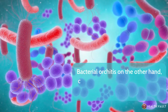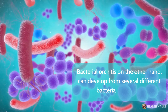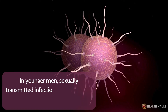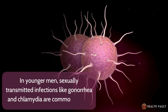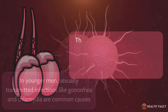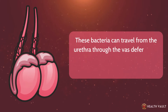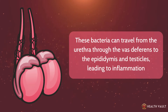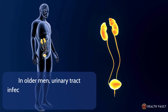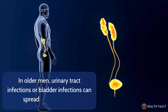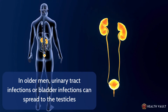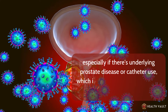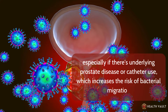Bacterial orchitis, on the other hand, can develop from several different bacterial infections. In younger men, sexually transmitted infections like gonorrhea and chlamydia are common causes. These bacteria can travel from the urethra through the vas deferens to the epididymis and testicles, leading to inflammation. In older men, urinary tract infections or bladder infections can spread to the testicles, especially if there's underlying prostate disease or catheter use, which increases the risk of bacterial migration.